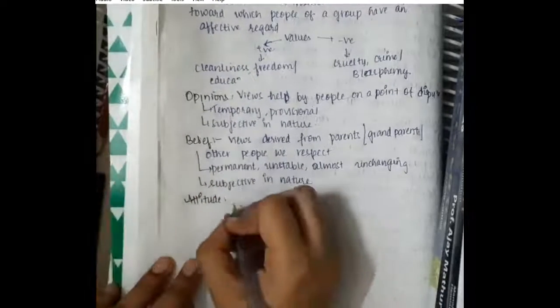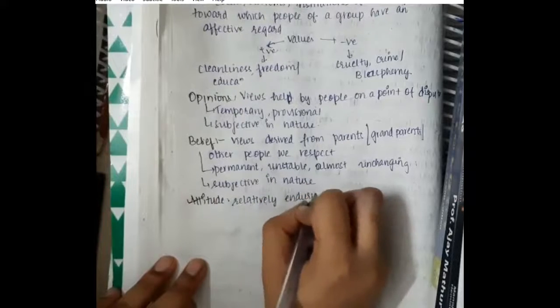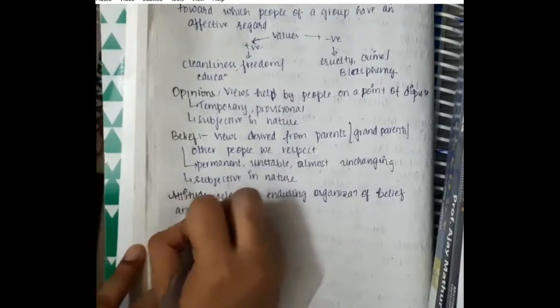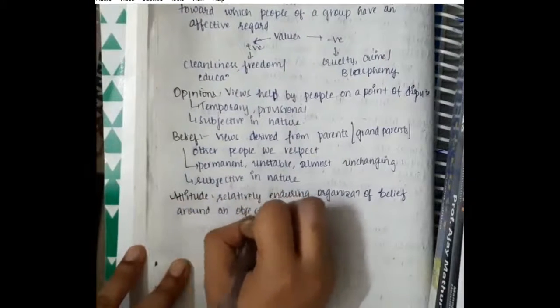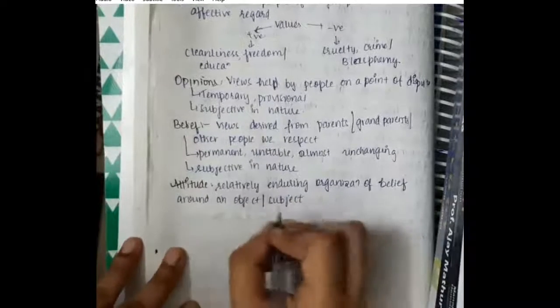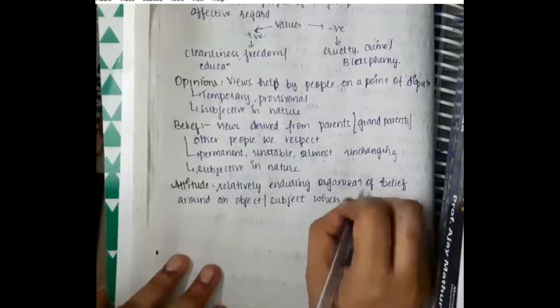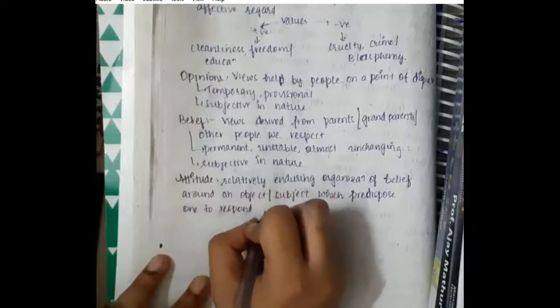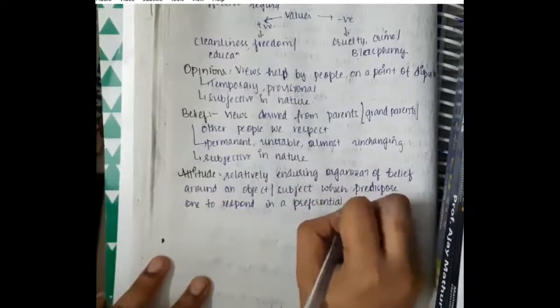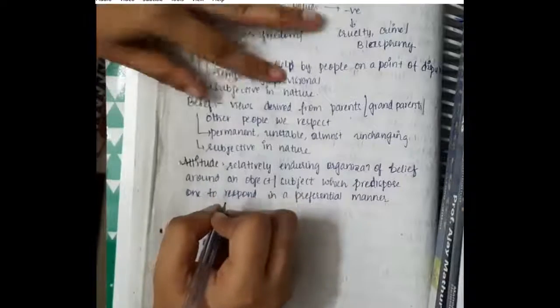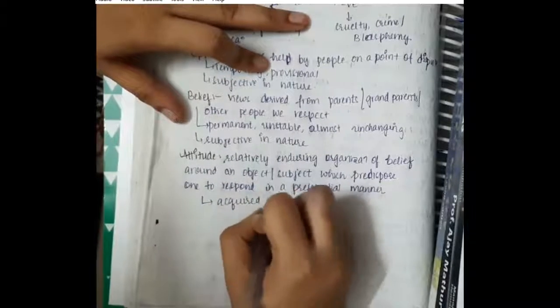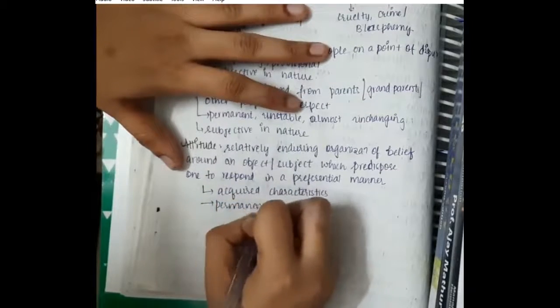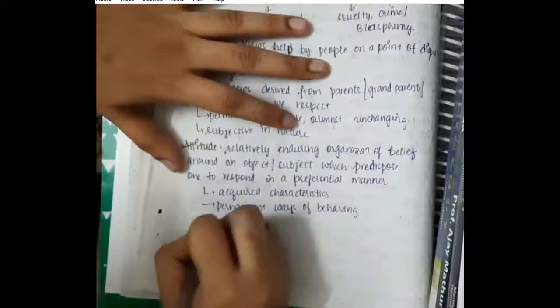Then we have attitude. Attitude is a relatively enduring organization of belief around an object or subject which will predispose one to respond in a preferential manner. In attitude, we love something or hate something, giving some things preference. Attitudes are acquired characteristics, permanent ways of behaving. They are actually caught, not taught. They are objective in nature.